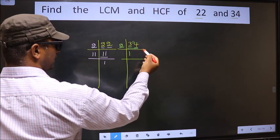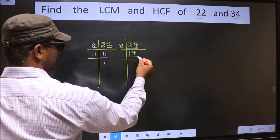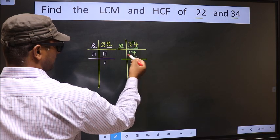1 carried forward making it 14. When do we get 14 in the 2 table? 2 times 7 is 14. Now here we have 17. 17 is a prime number, so 17 once, 17.